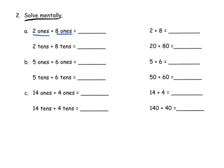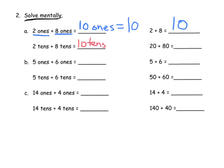So we've got 2 ones and 8 ones — that's equal to 10 ones. But 10 ones is equal to 10. I'm going to specifically label it 10 ones and then include the extra answer. So 2 tens plus 8 tens is going to equal 10 tens. But 10 tens is equal to 100. So really that's equal to 100. Then 5 ones plus 6 ones equals 11 ones, which is equal to 11.